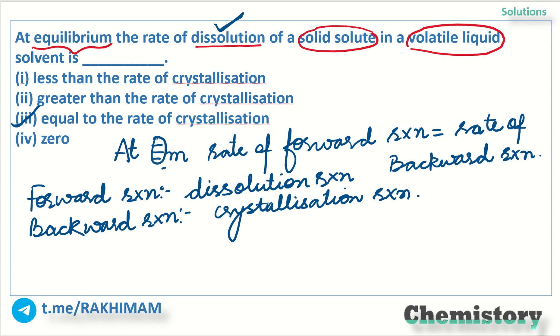So at equilibrium the rate of dissolution will be equal to the rate of crystallization. Let us remember that with temperature increase, there is an increase in the solubility of a solute in the solvent. And this can lead to the formation of a highly saturated solution. It was extra knowledge for you people. Option number 3 is the right answer for the question.